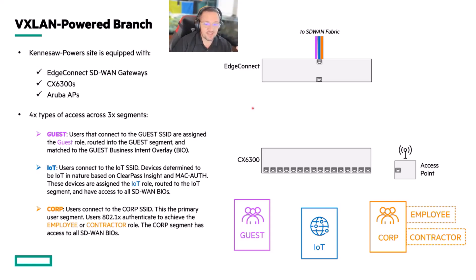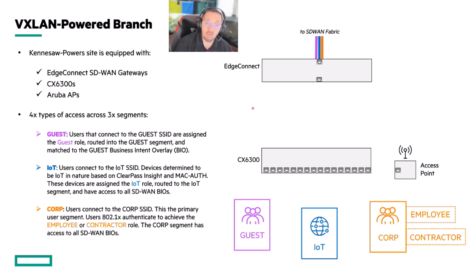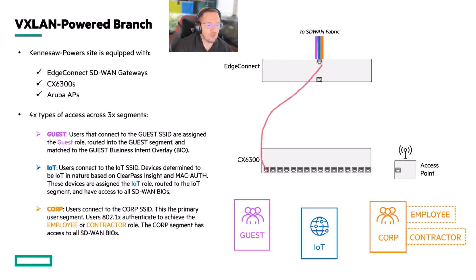So we've got guest, IoT, employee, and contractor — essentially the four roles we're dealing with. What will this look like in the configuration? The EdgeConnect already knows about these segments with everything configured up here, but how do we handle all the middle part?